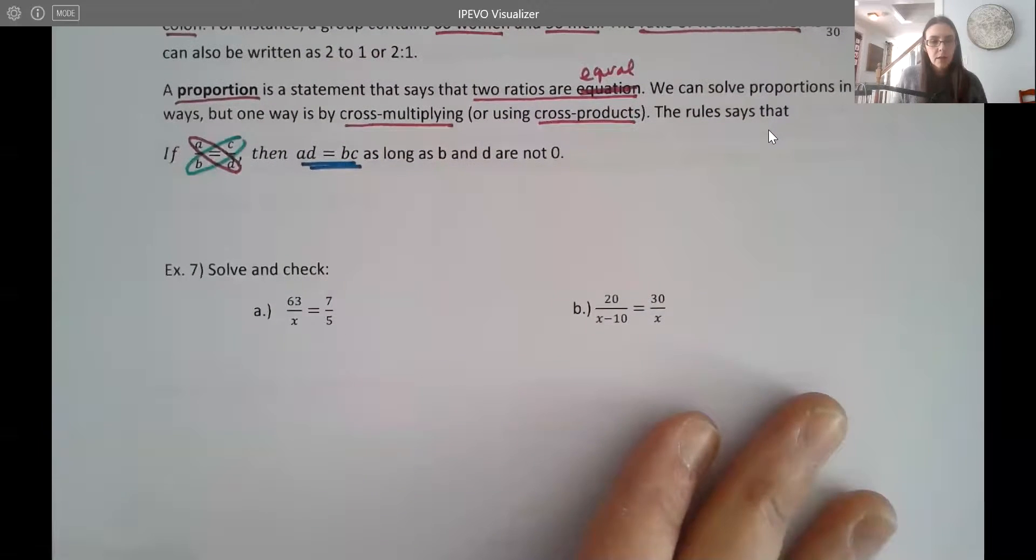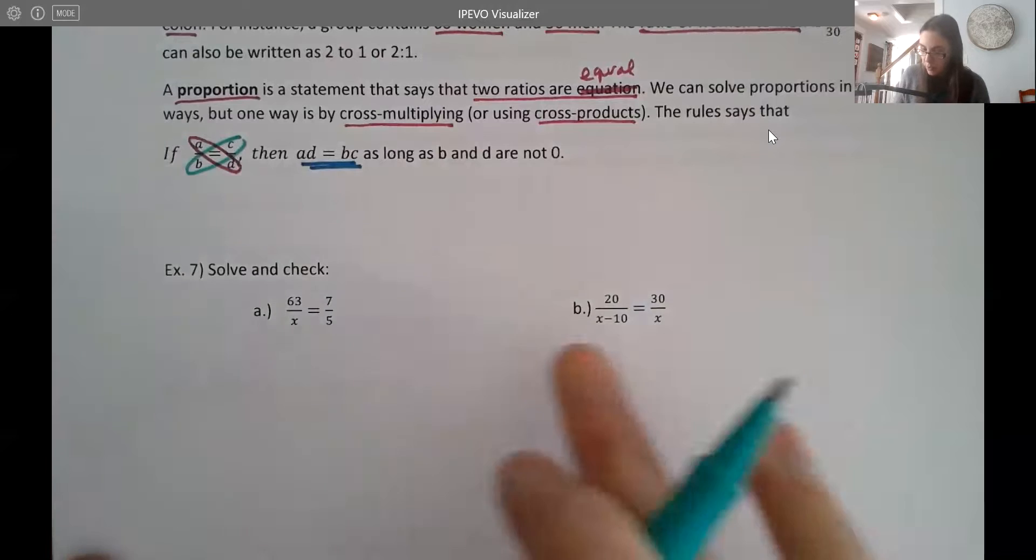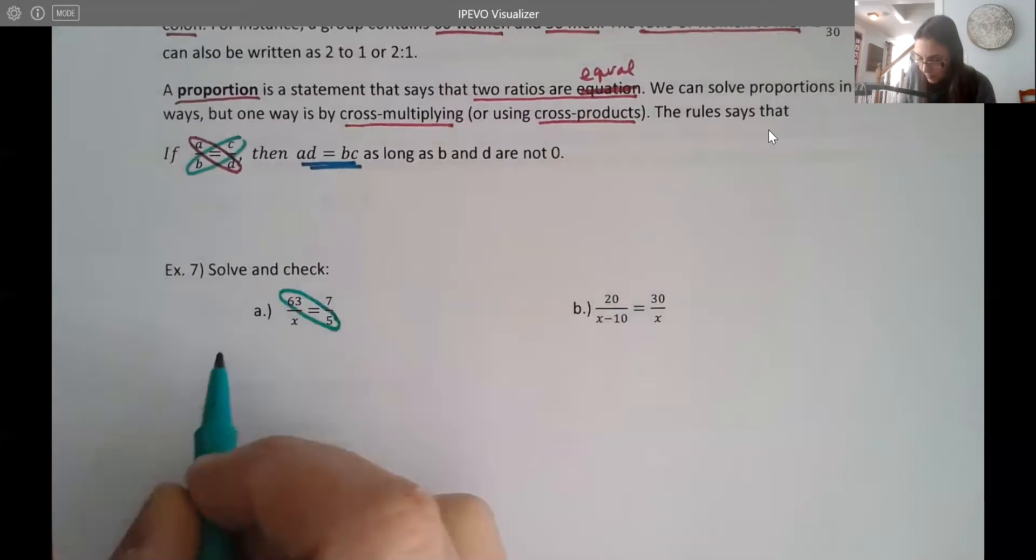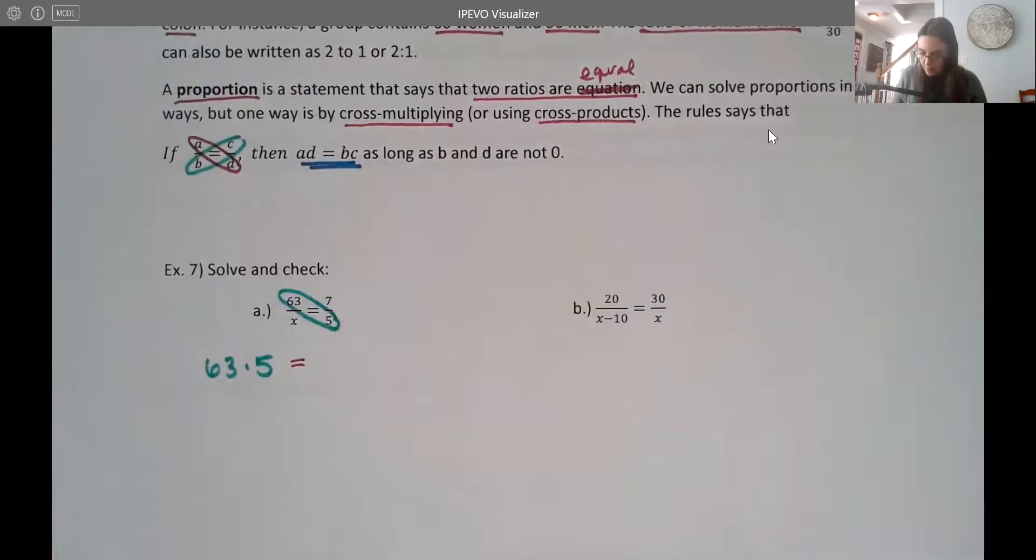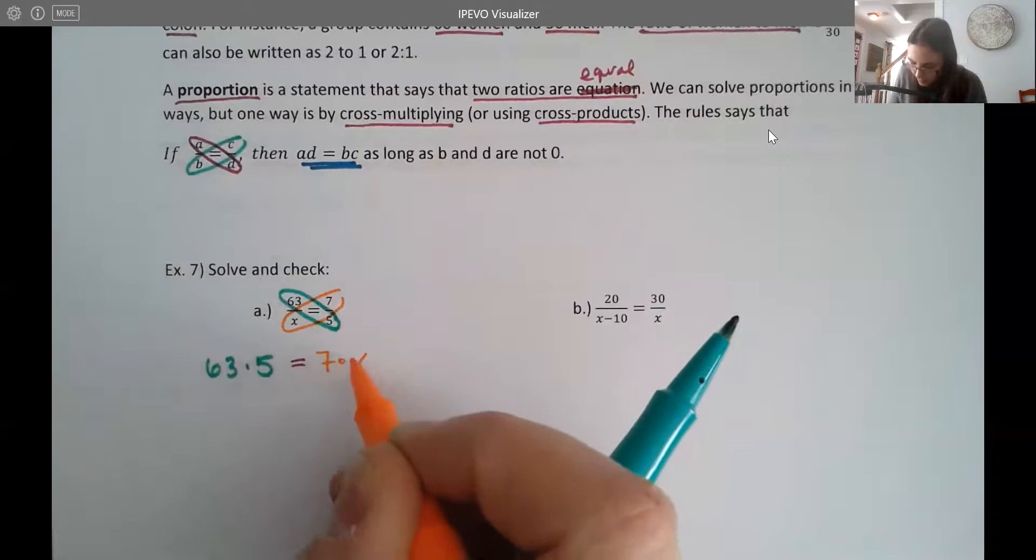So let's try it out. All right. So here are my proportions. To solve here, I'm going to multiply this way. So I'm going to do 63 times 5 equals, and then we multiply it this way, 7 times X.